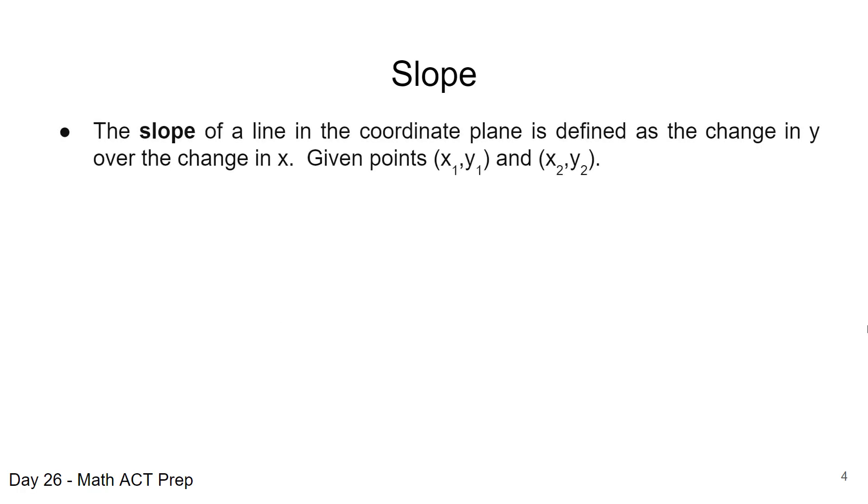So when we're talking about slope, we're looking at a line on the coordinate plane, and it's defined as the change in y over the change in x. You may have heard that. You're usually given some points, x1, y1, and x2, y2, and we want to find the slope of the line that connects those two points.